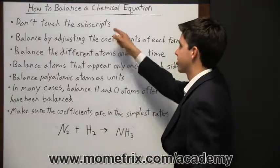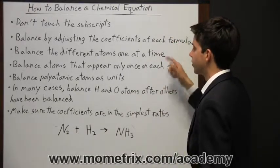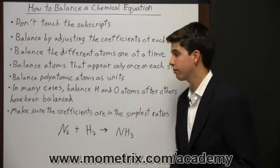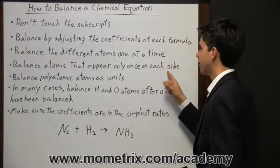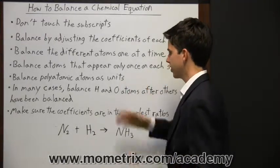So first, don't touch the subscripts. Instead, you're going to balance by adjusting the coefficients of each formula. Then balance the different atoms one at a time. So balance one atom, then move on to the next. Balance atoms that appear only once on each side. Balance polyatomic atoms as units.